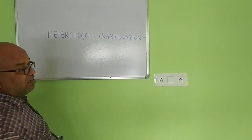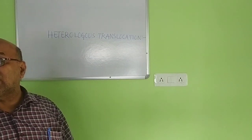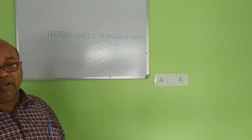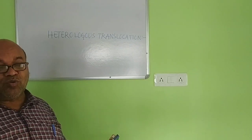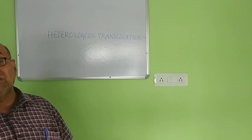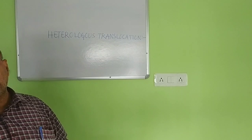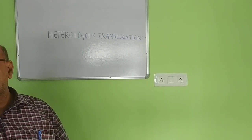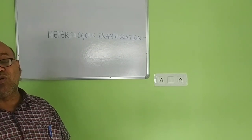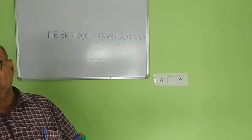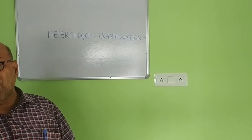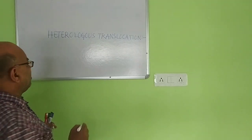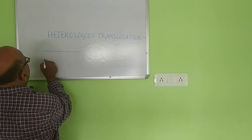This is called heterologous translocation, which involves generally shifting segments from one chromosome to another chromosome body which is not identically the same. In this case, the shifting occurs from one chromosome to another dissimilar chromosomal body — that is the heterologous form. Let us reveal in detail about it by looking at the picture.